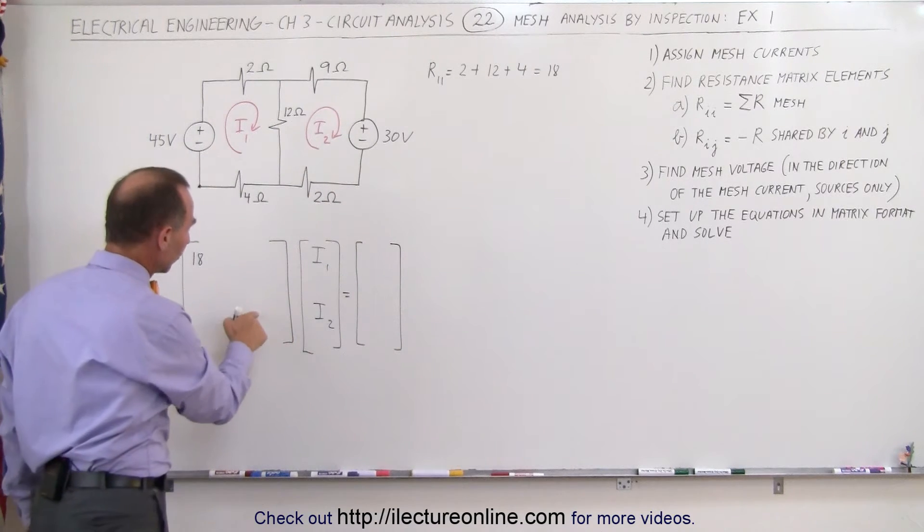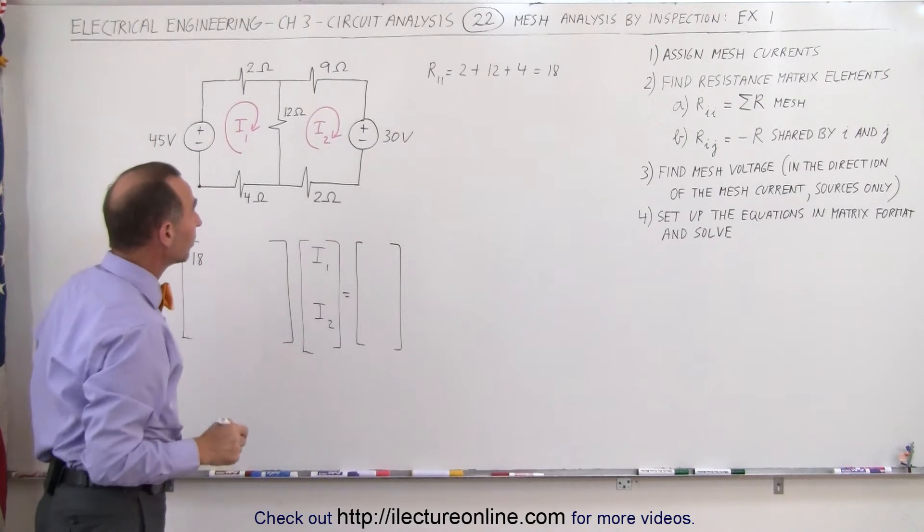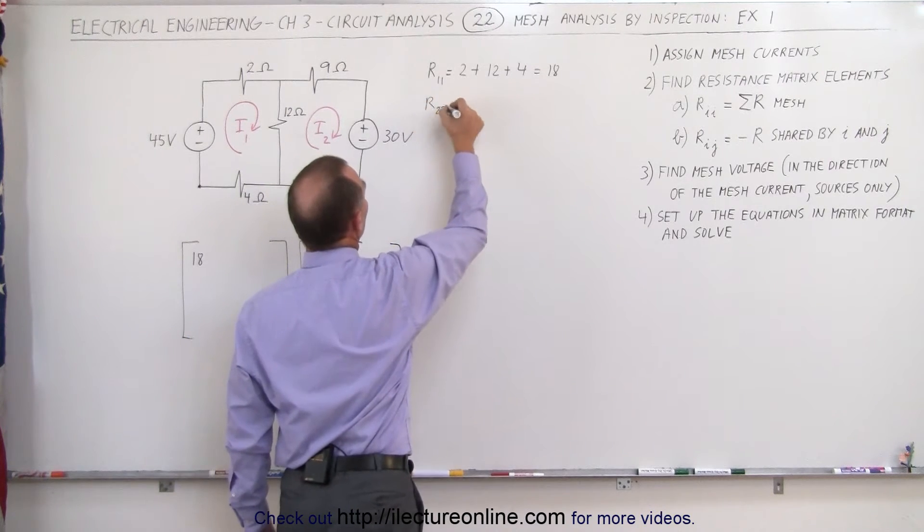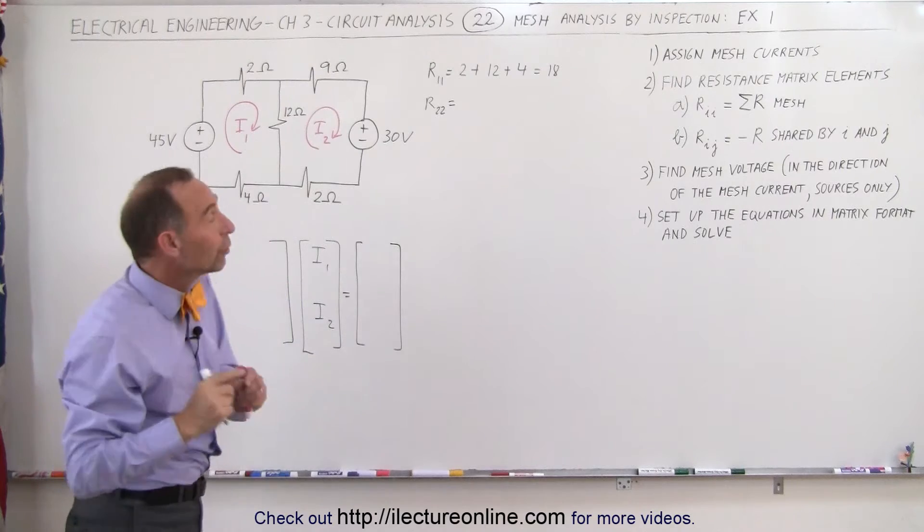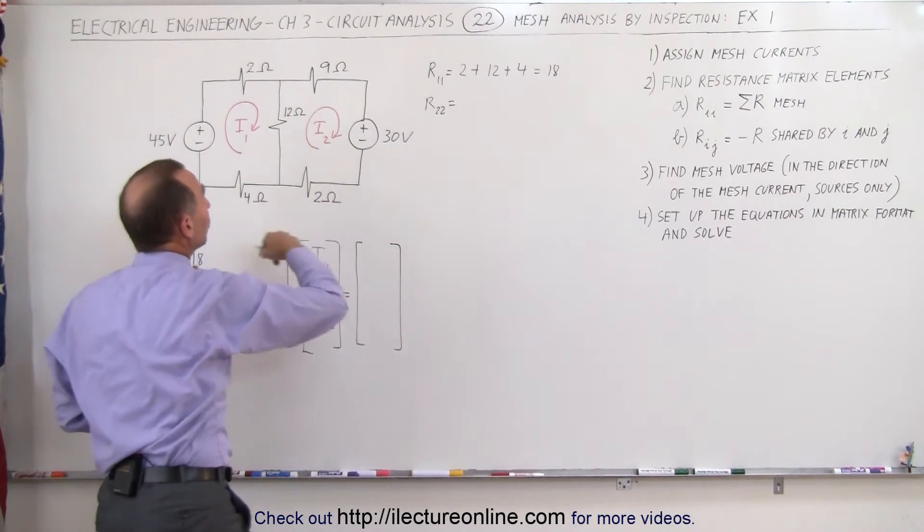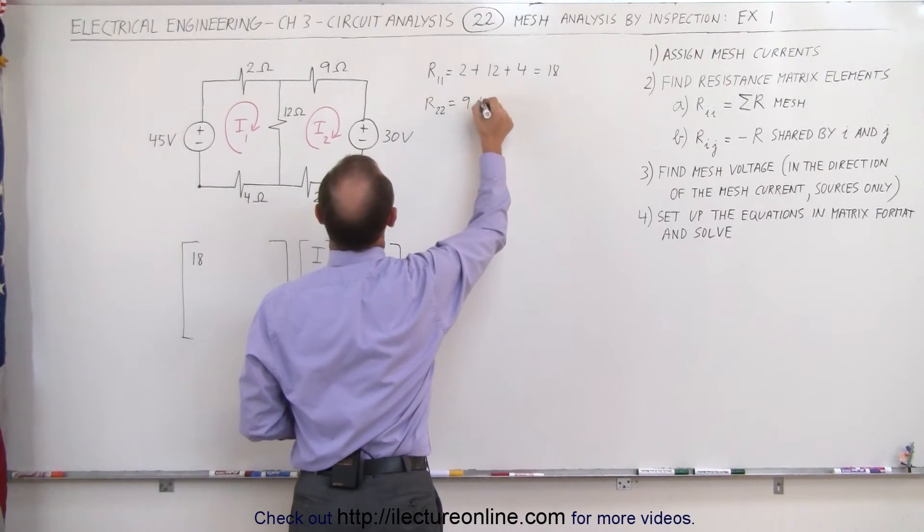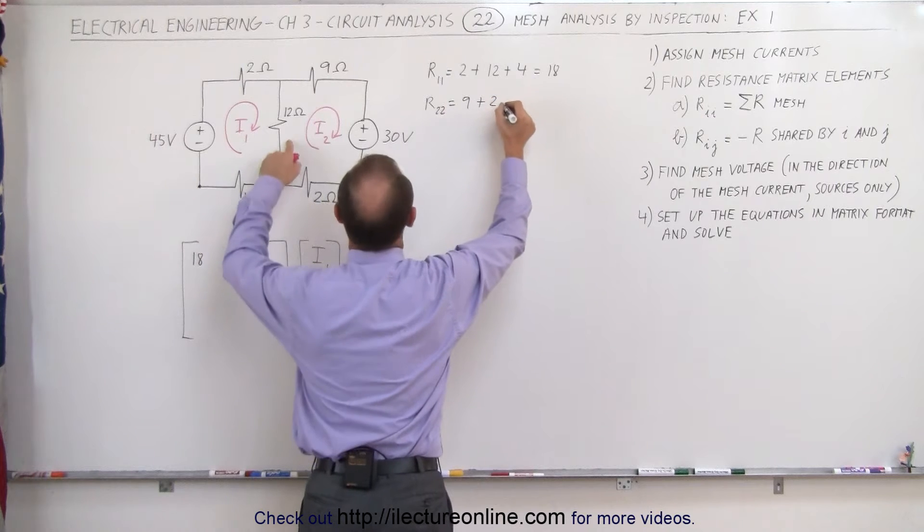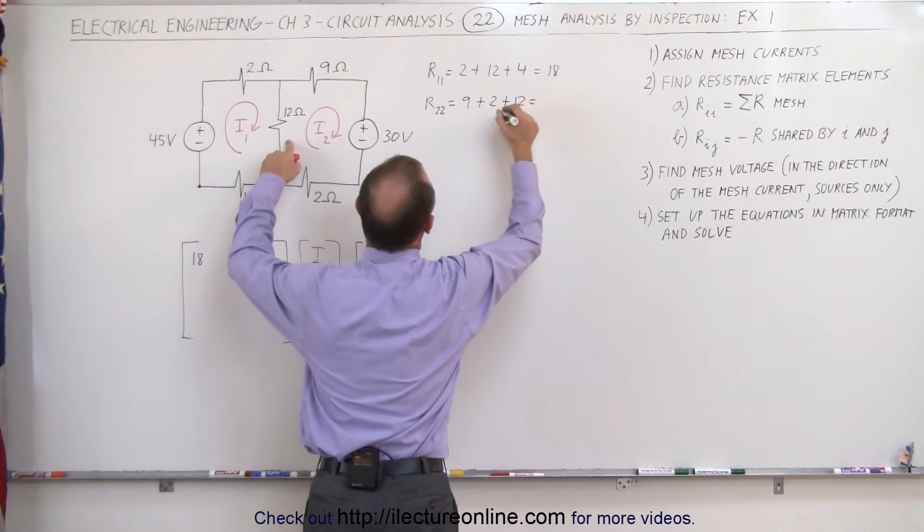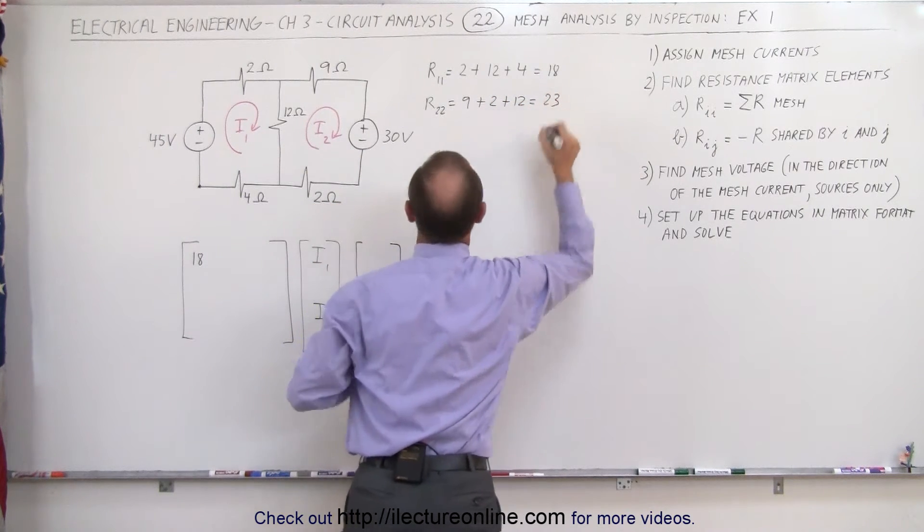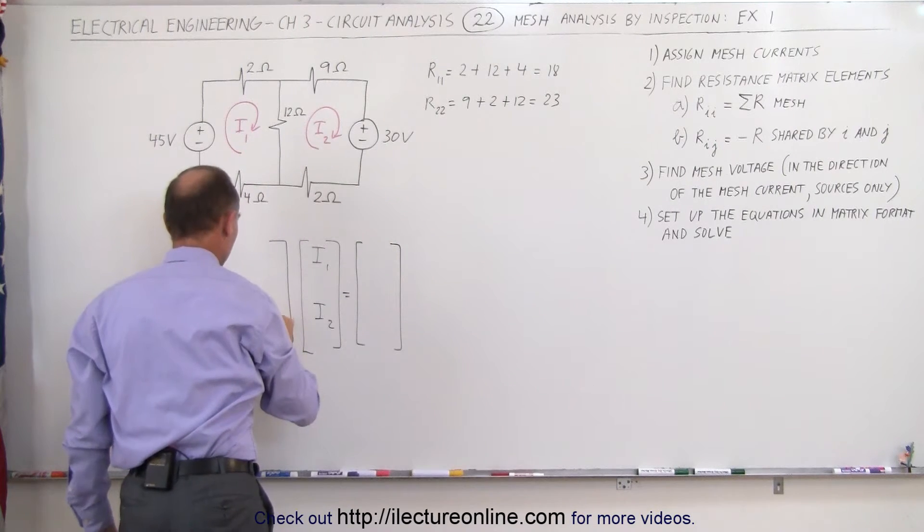The next element is the one down here. We're going down the diagonal and we want to find R22, which means that is equal to the sum of all the resistances around loop number 2. That would be 9 plus 2 plus 12—that's 14 plus 9, which is 23—and that's the number that goes in here.